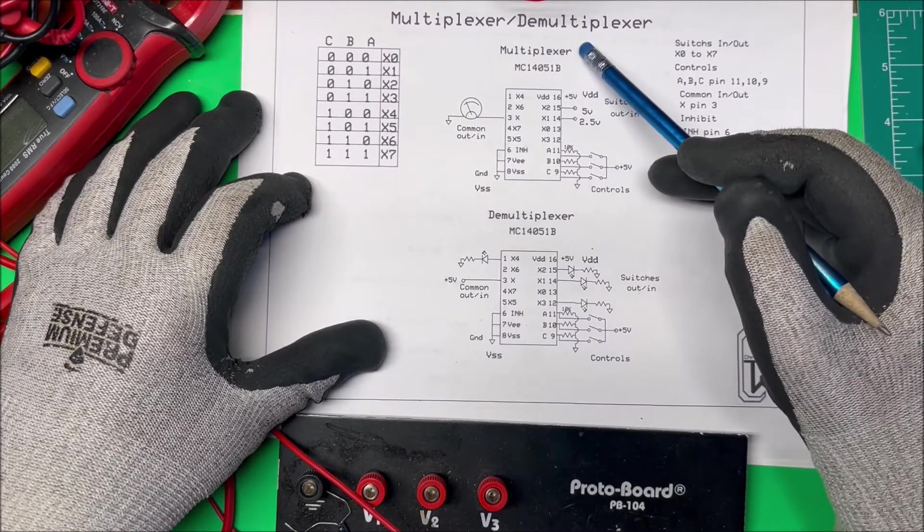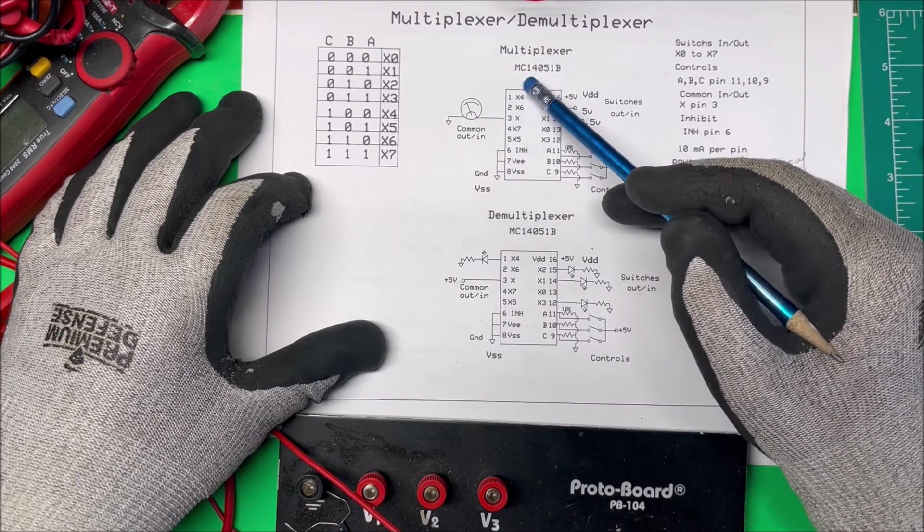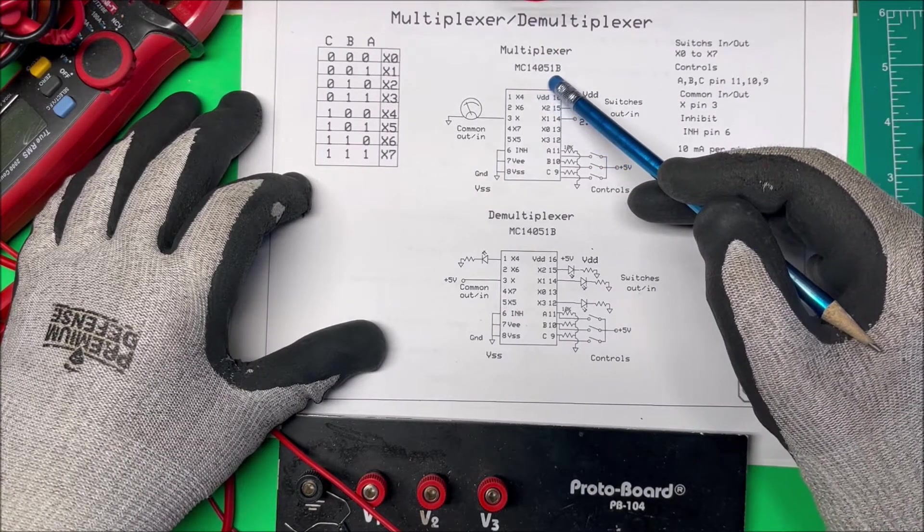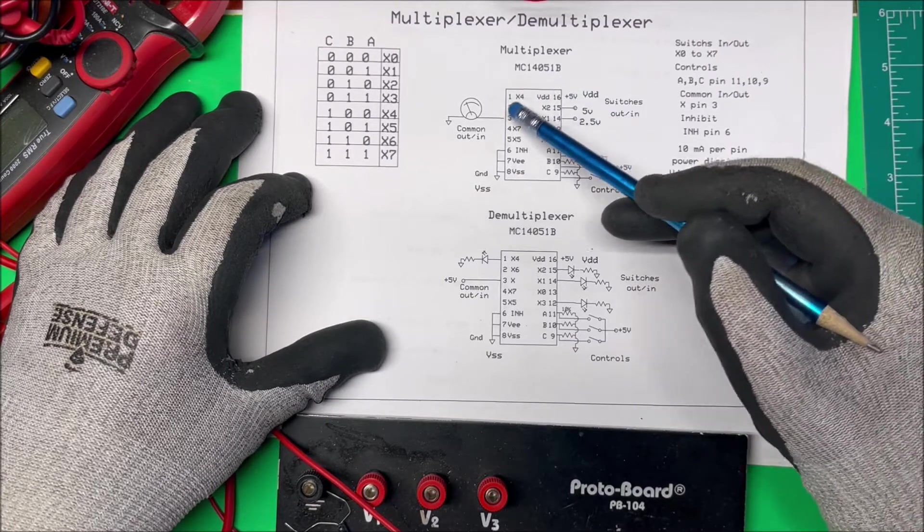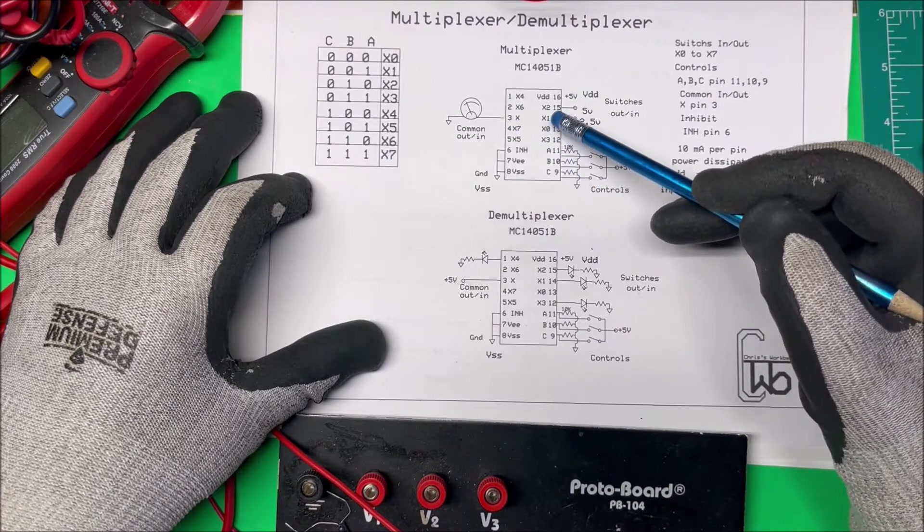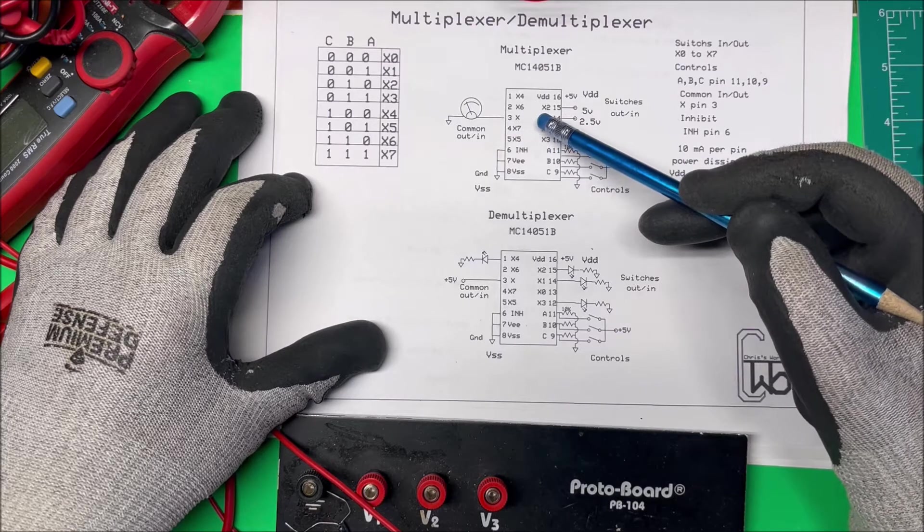Let's take a look at a multiplexer and a demultiplexer. I'm going to use an MC14051B, which has eight switches in it and it's going to be fine for my application.